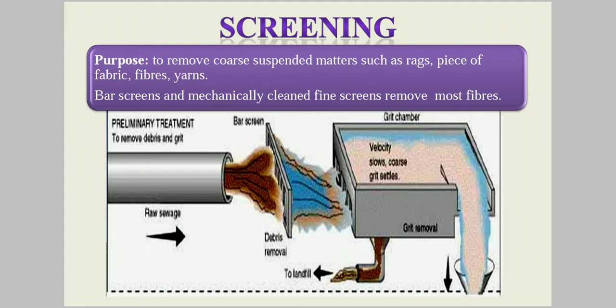The purpose of screening is to remove the coarse suspended materials such as rags, pieces of fabric, fibers, or yarns present in the wastewater effluent. We use bar screens or mechanically cleaned fine screens to remove them. Almost all fibers can be removed by this screening method. First the effluent is passed through a screen, and if a grit chamber is needed, we go for a grit chamber.